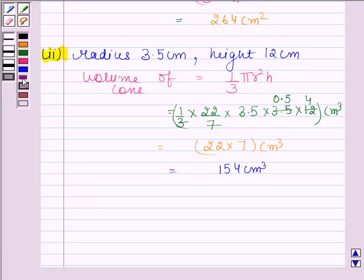Hence the required answer of the first part is 264 cm³ and for the second part is 154 cm³. So this completes the session. Bye and take care.